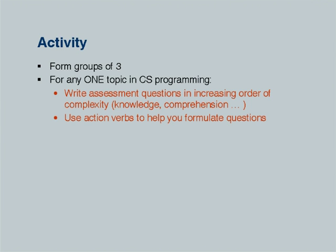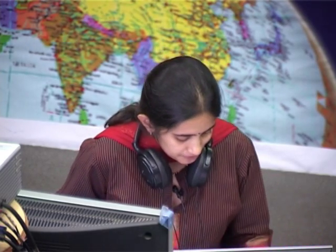For the next activity, pick any other topic you will teach, in groups of 3 or 4 — or if you have a smaller center, the entire group — and write assessment questions for each of Bloom's six levels. We will give 2 minutes per center and start with the centers that haven't had a chance to present yet. Let's say about 3 or 4 minutes. New topic — not arrays — please write these questions.